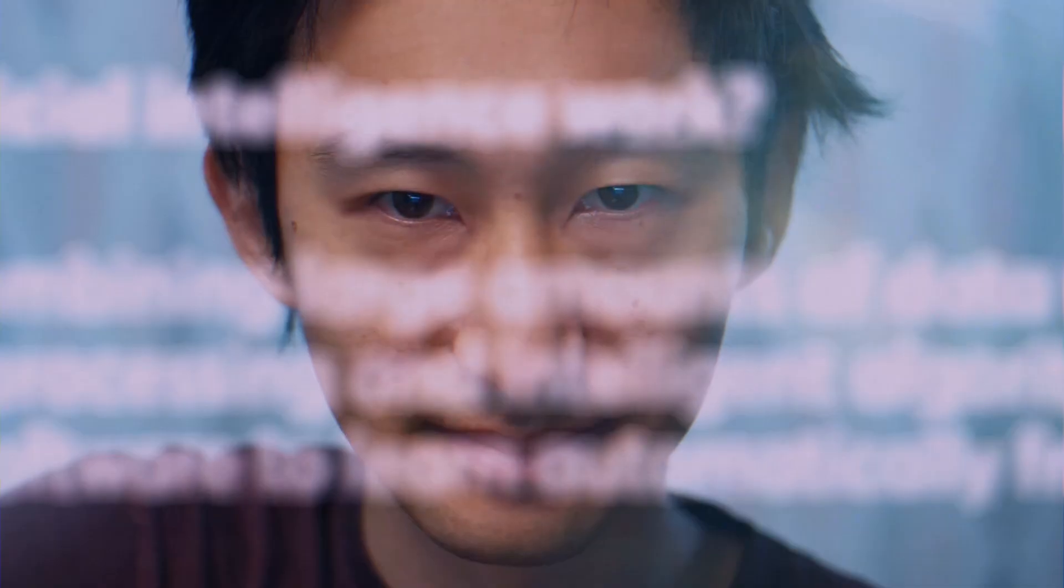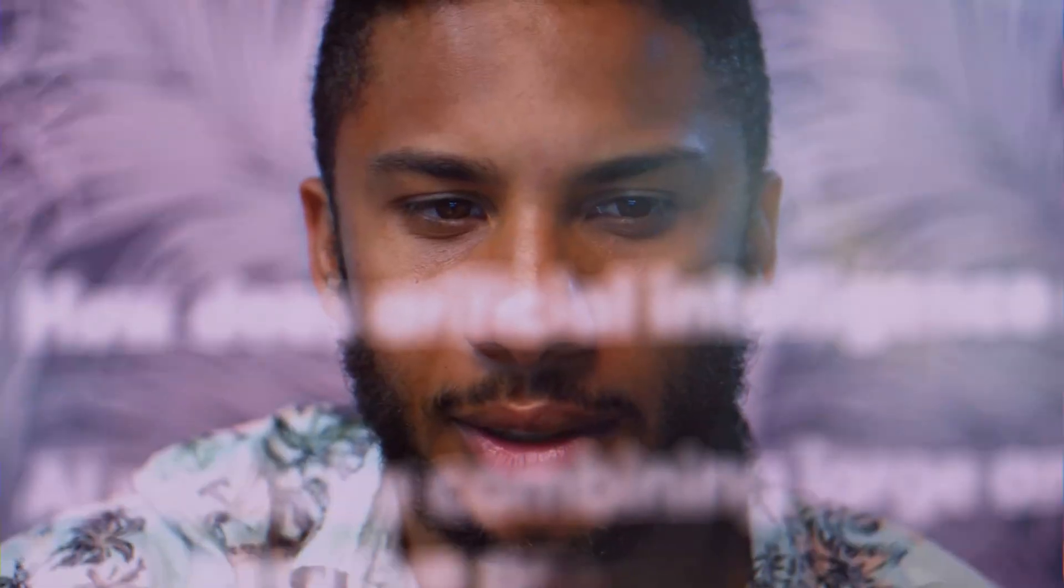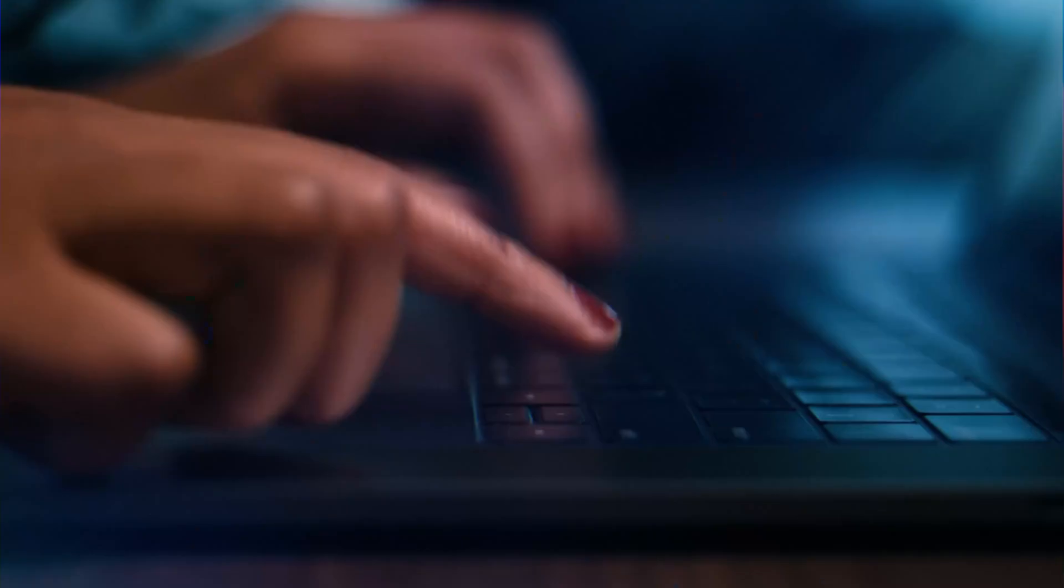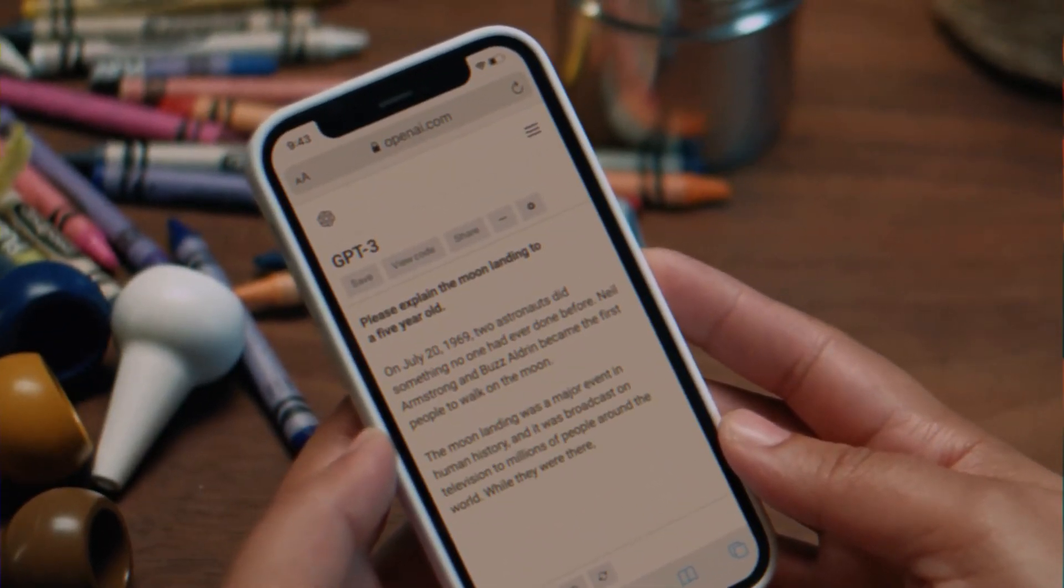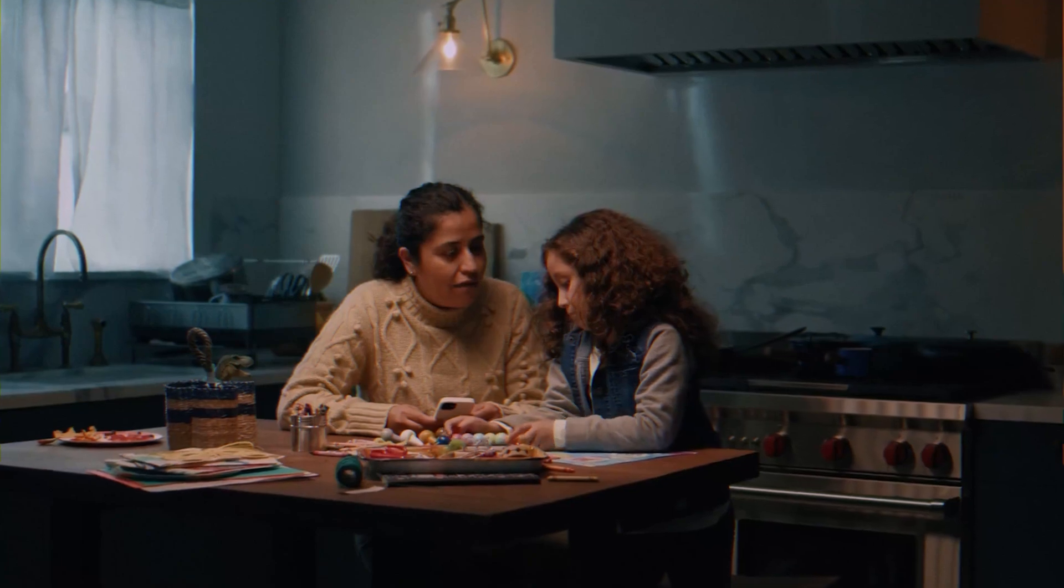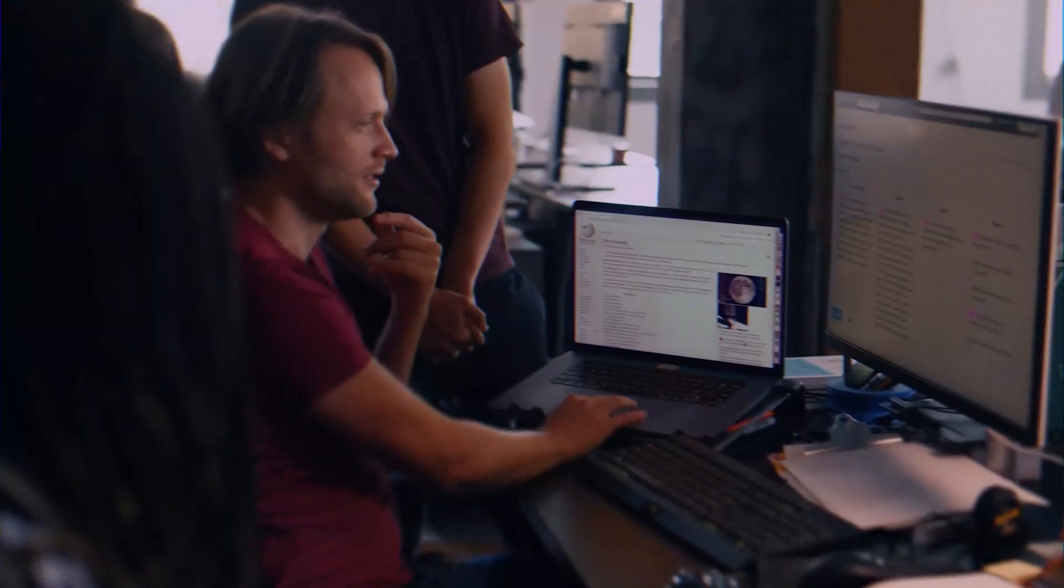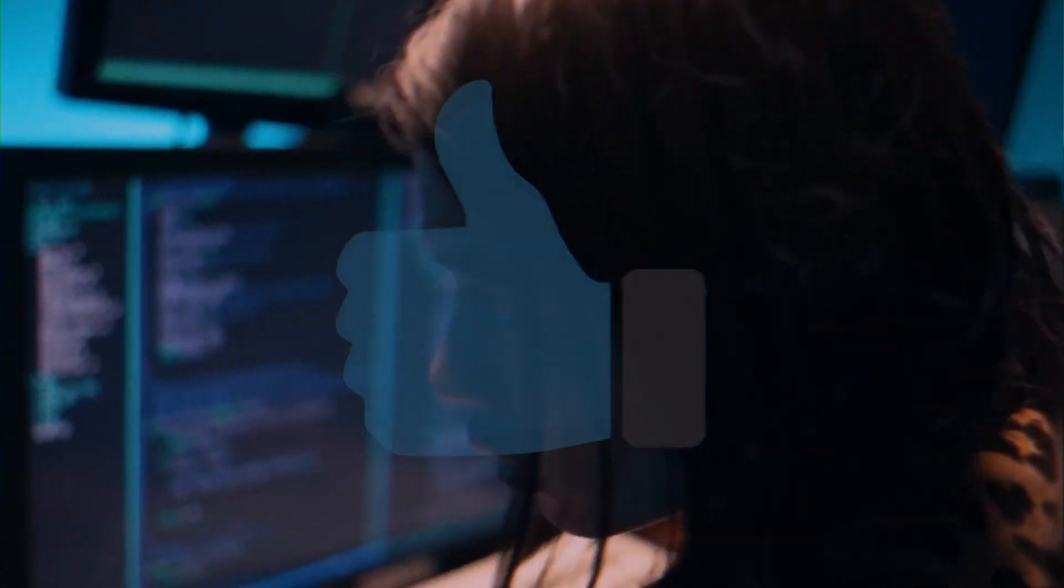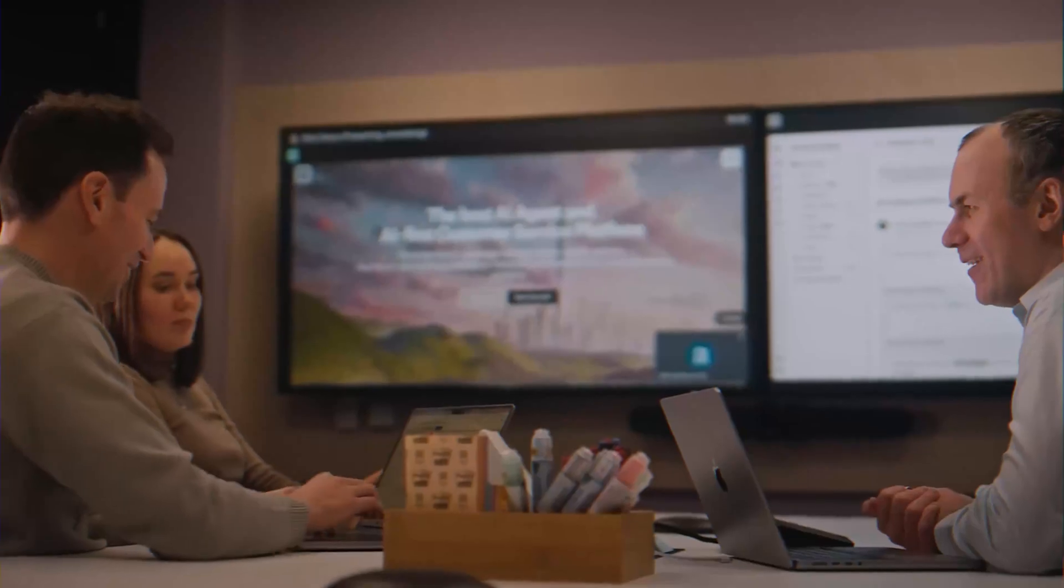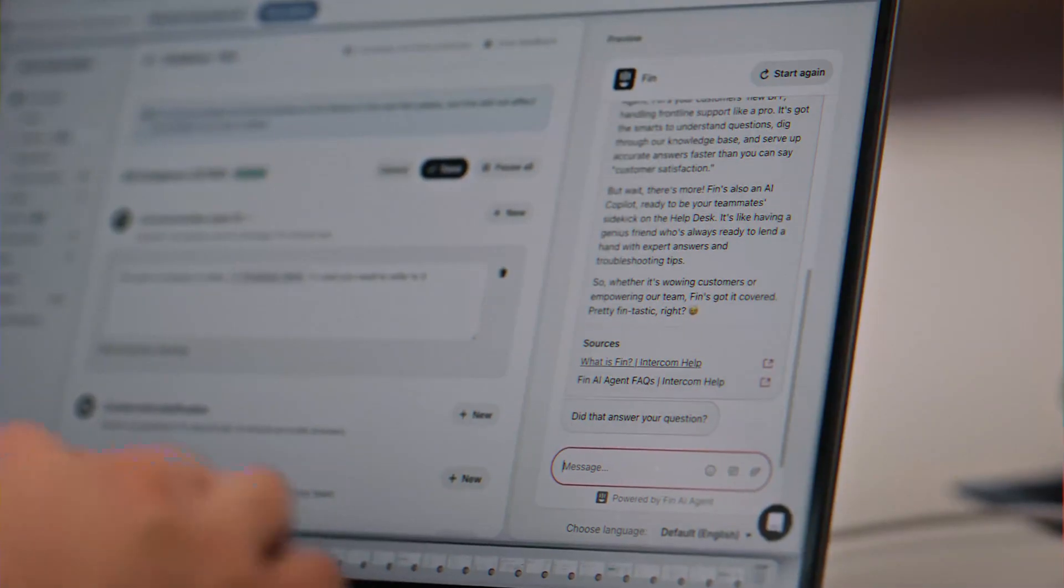Third, this new version is immediately put to the test. It's given a quiz – a question it could only answer correctly if it successfully internalized the new information. Fourth, and this is the most important part, it gets a reward. If the updated AI answers the question correctly, the self-edit that led to that success gets a big thumbs up. The system makes a note – this was a highly effective way to learn. If the AI fails the test, that self-edit gets a thumbs down. It was a waste of time.